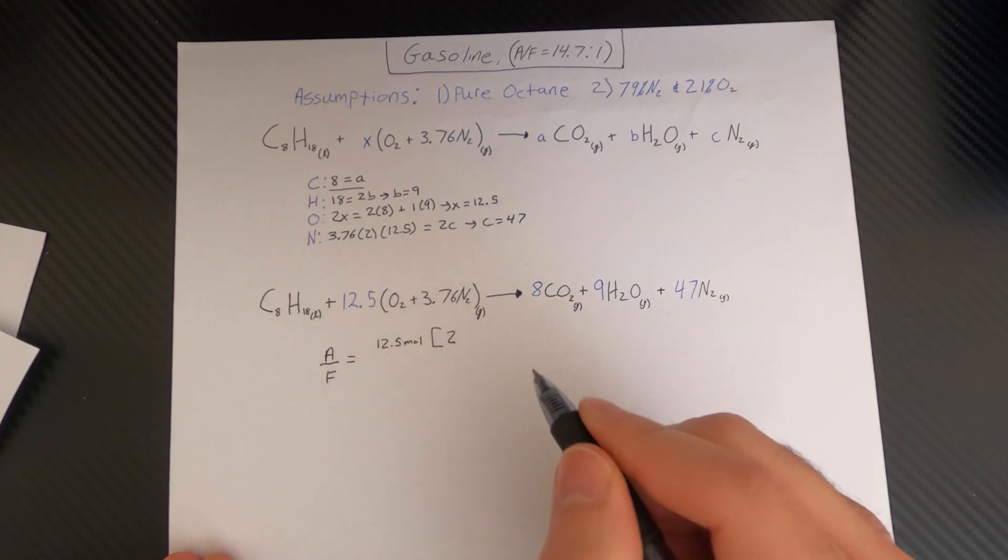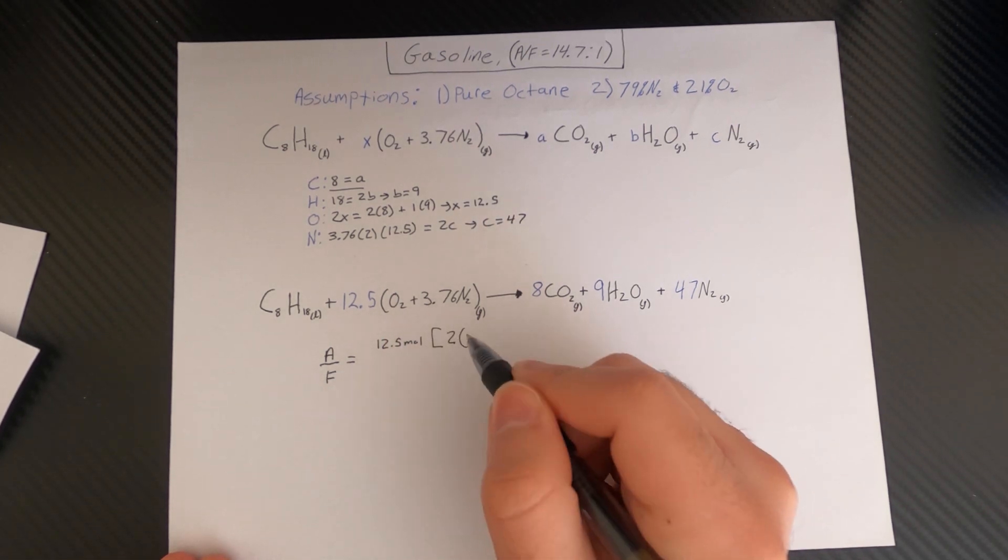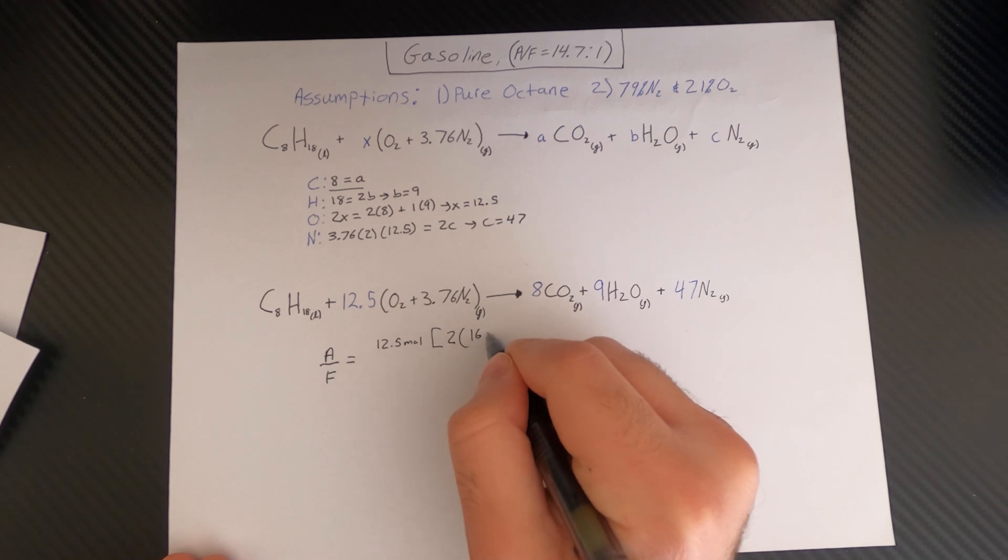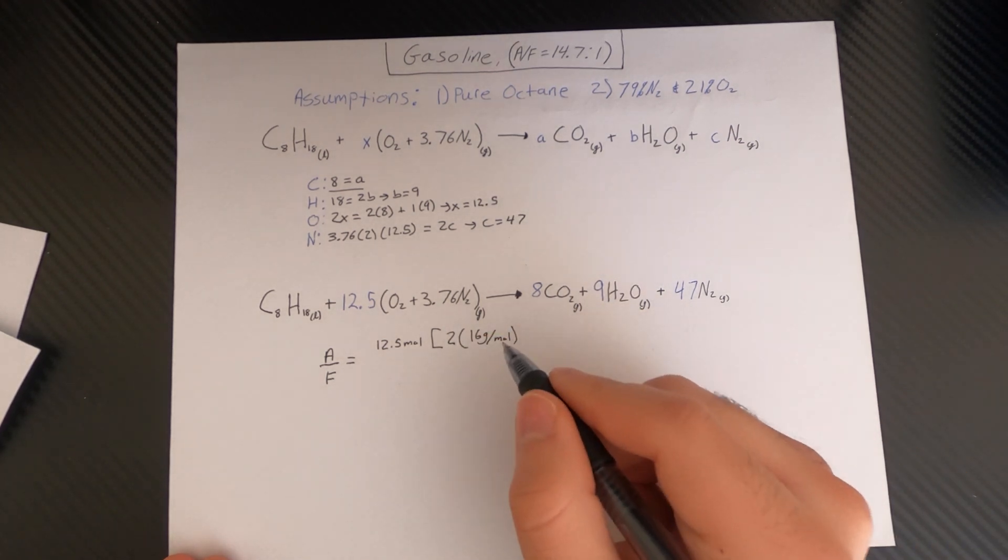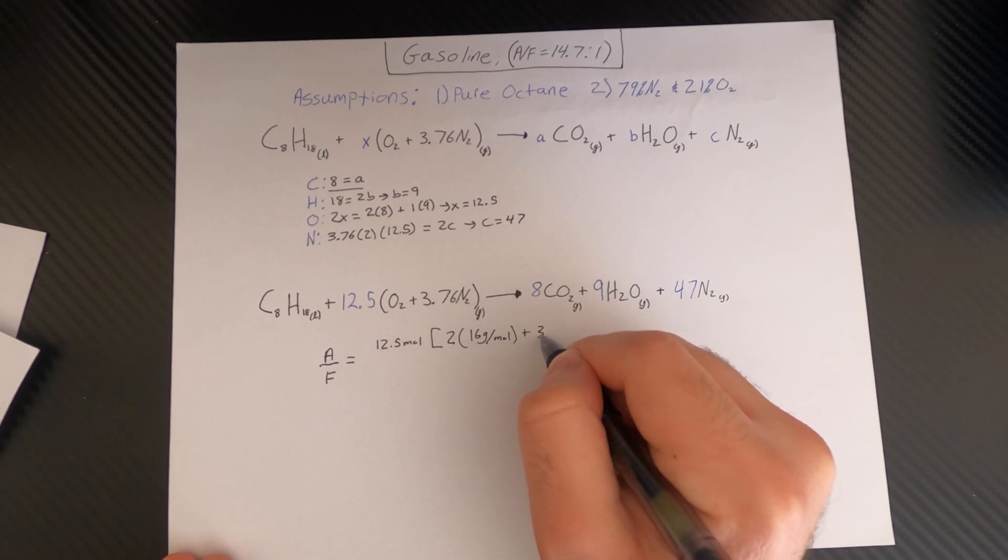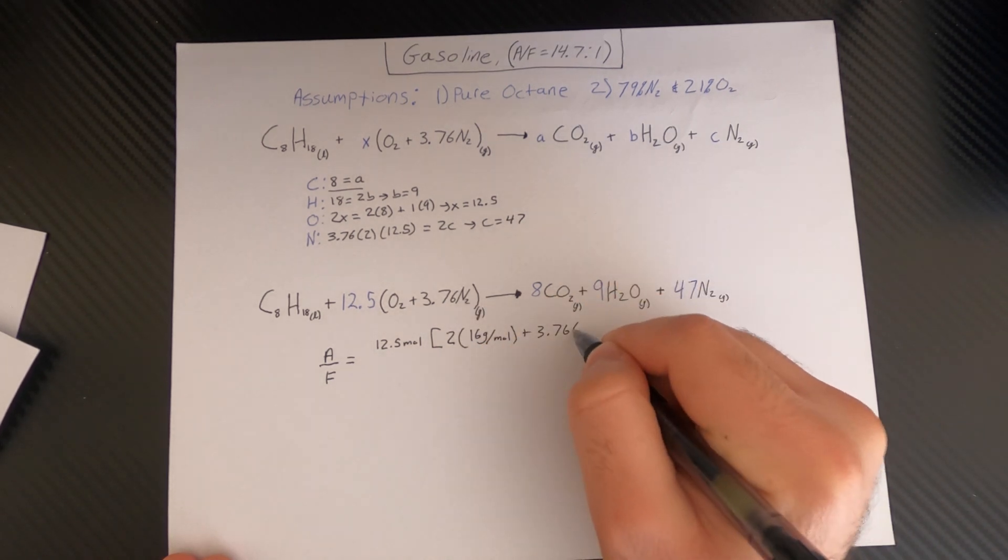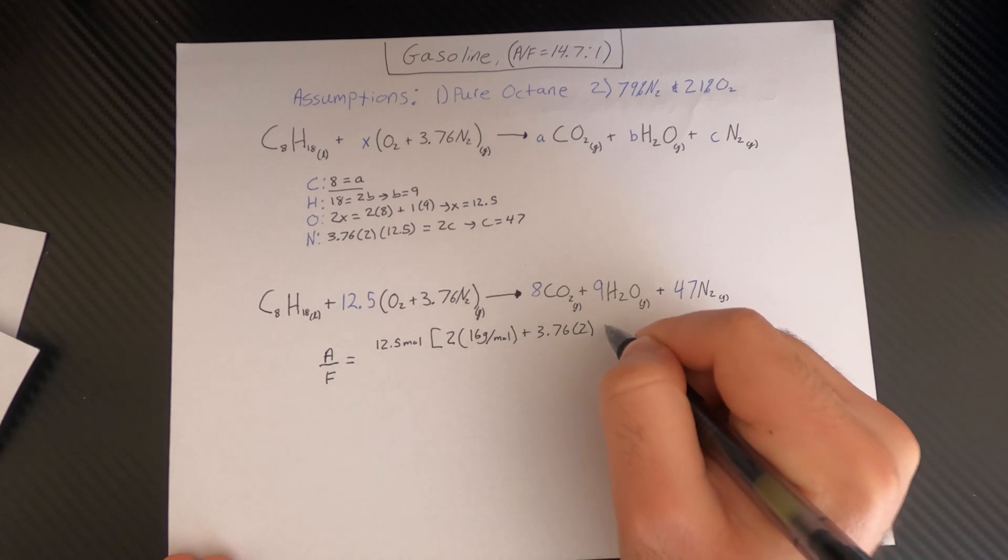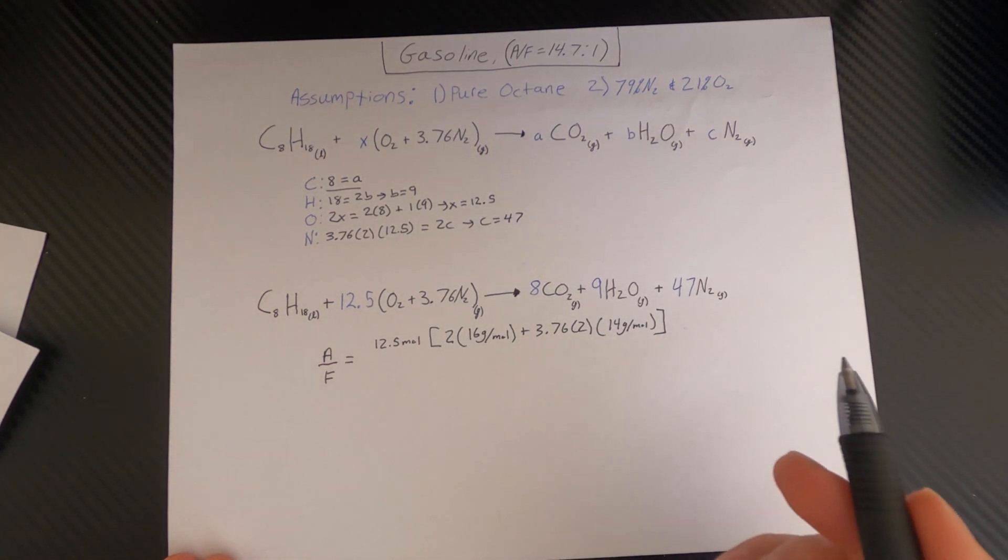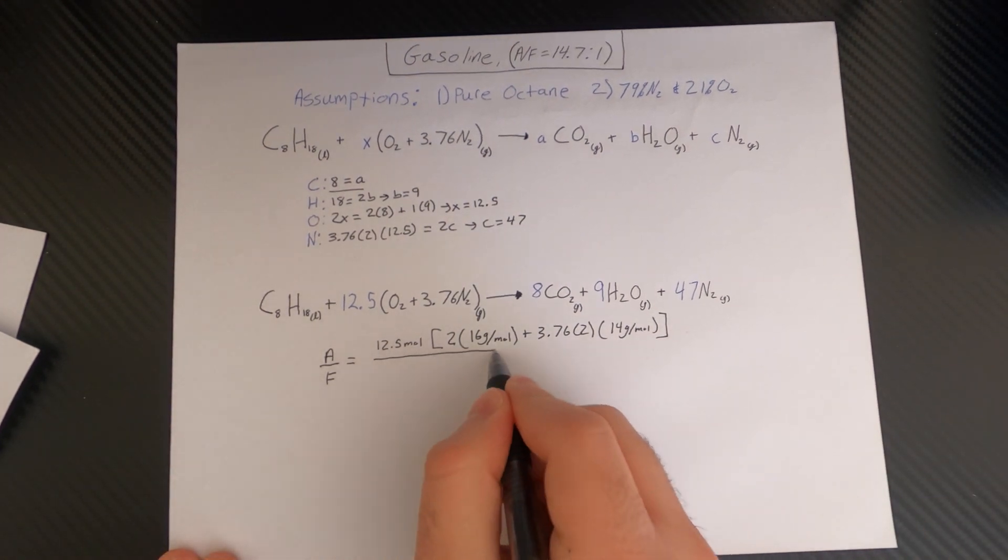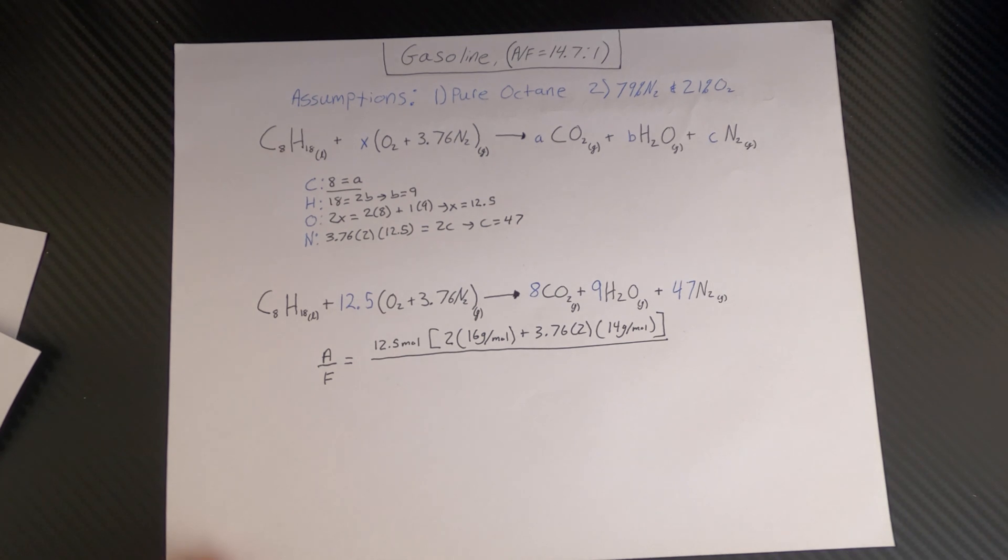So you can look that up in the periodic table and get 16 grams per mole, and then we continue down through. So plus 3.76 for nitrogen times the two as well. If you look up 14 grams per mole, and that's everything for air. On the bottom you can go ahead and fill in what we need for the octane. So we have one in front of here, so one mole.